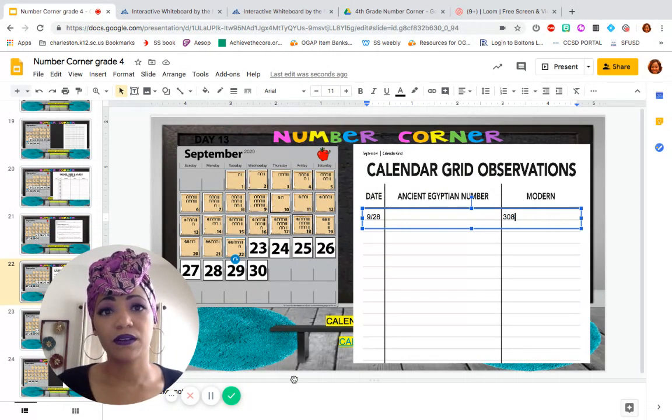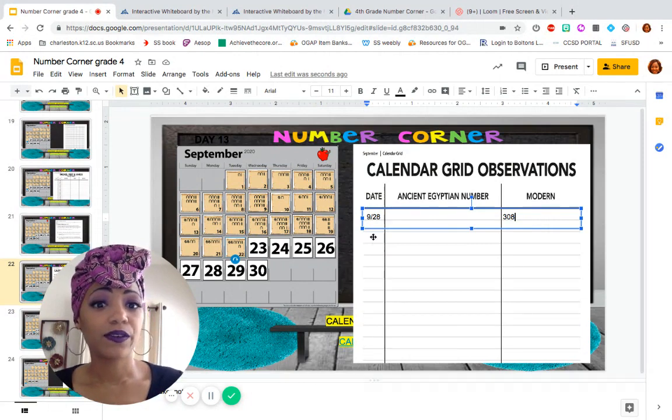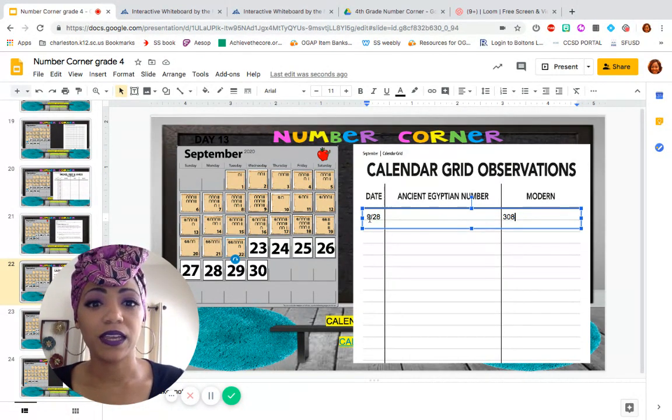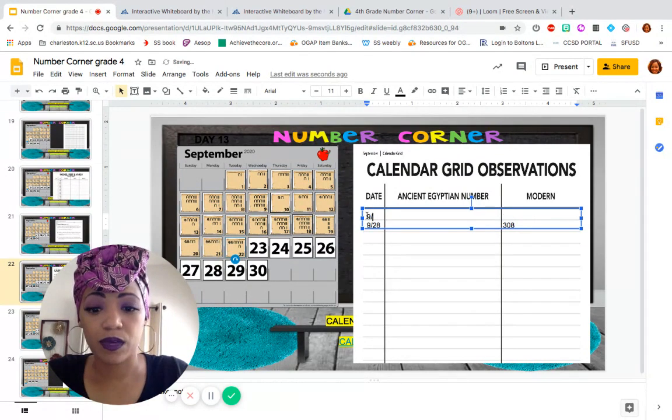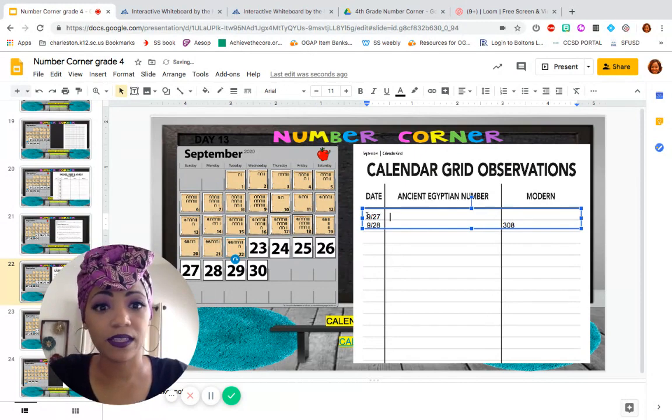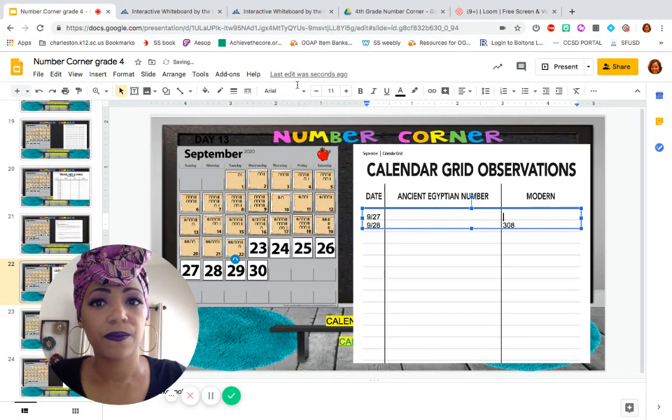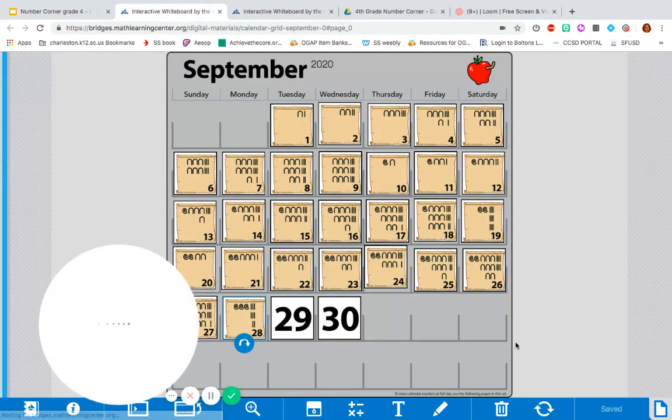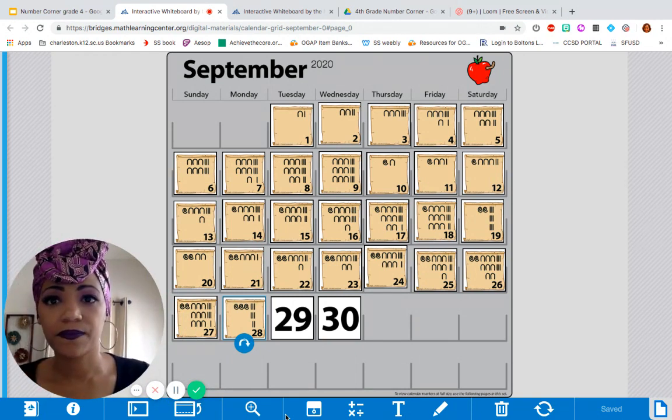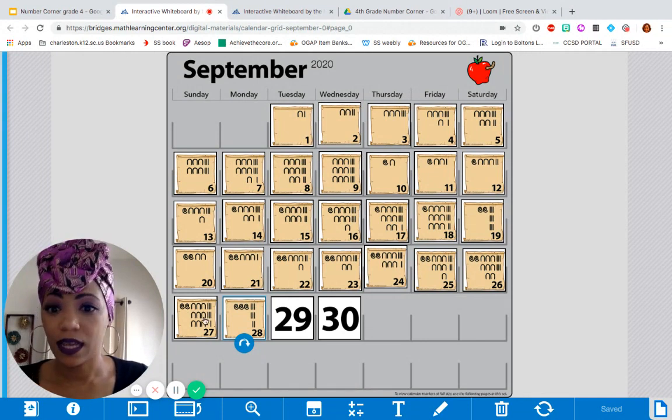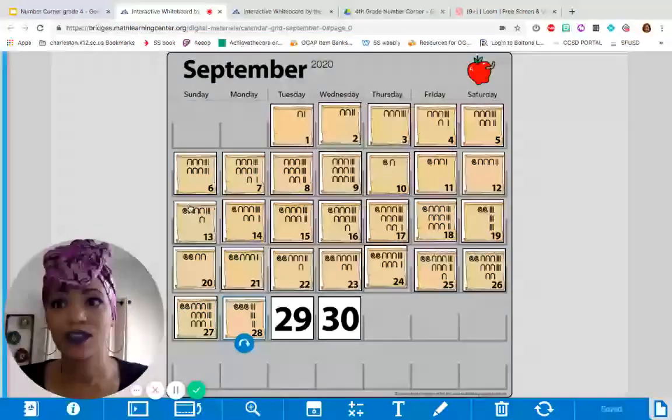Okay. So, I just recorded it on our chart here. So, for September 28th, we have 308. But, I also would like to record what yesterday's modern numeral was for September 27th. So, let's look at that card. What's the modern numeral here? Right. 200 plus 90 plus 7. So, 297. So, let's record that as well.